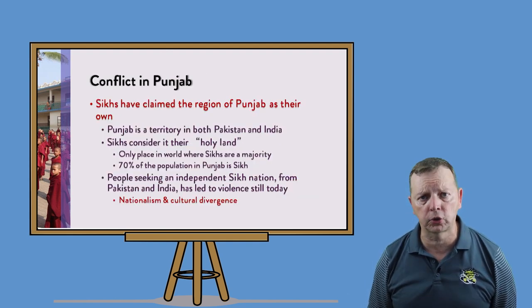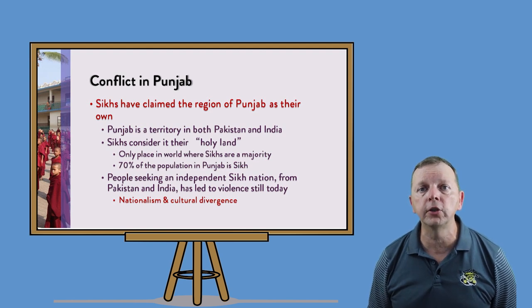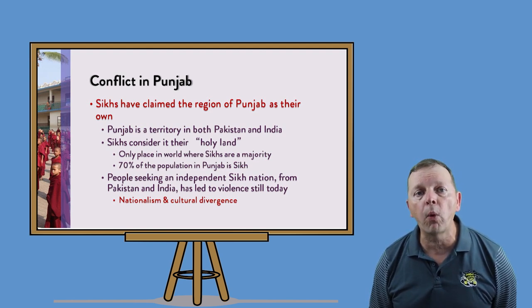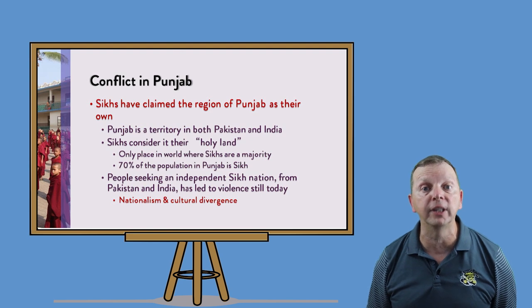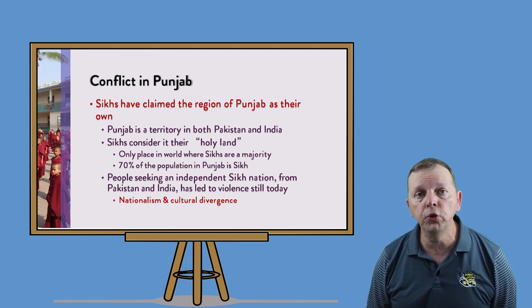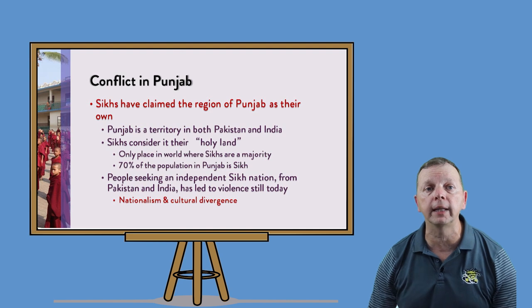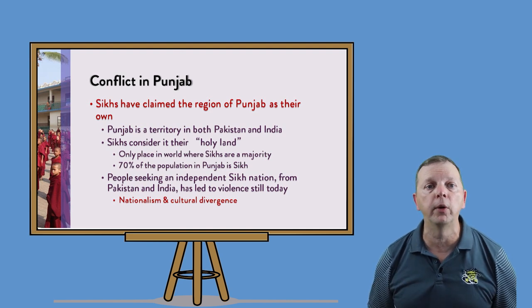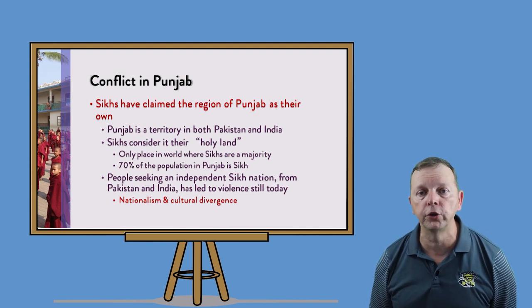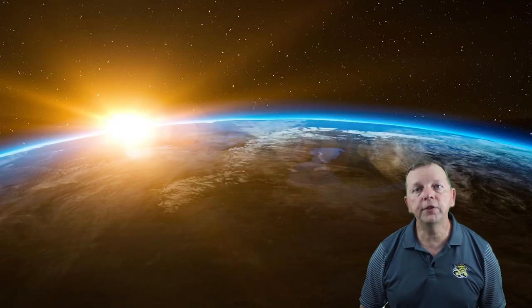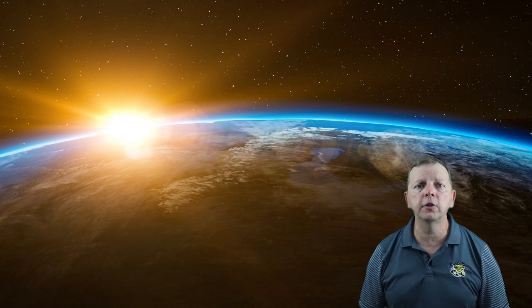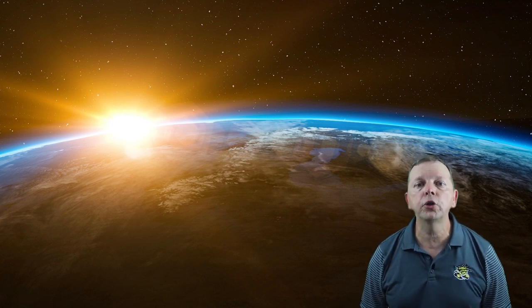Now, the Indian state of Punjab is also a source of conflict. Punjab is considered holy by the Sikhs, which is why 70% of the population is Sikh. Within Punjab, there is an independence movement of Sikhs which has led to violence in the region — another example of nationalism and cultural divergence. We've discussed the early civilization, we've explored the role of religion in the region, we've examined the impact of British colonialism and the independence movement that followed. You now should be able to understand how all of these have helped shape the culture of South Asia.